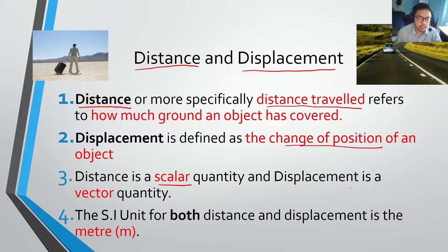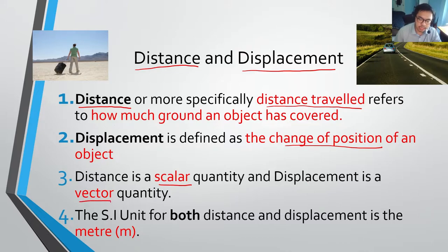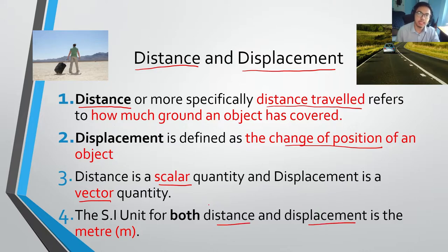Distance is a scalar quantity, because when you're measuring distance, you don't have to worry about which direction you're going — you only have to worry about how much ground you have covered. Displacement, however, is a vector quantity, so you have to worry about which direction you're going. The good thing is that both distance and displacement have the same SI unit — they are both quantities of length, and the SI unit is the meter.